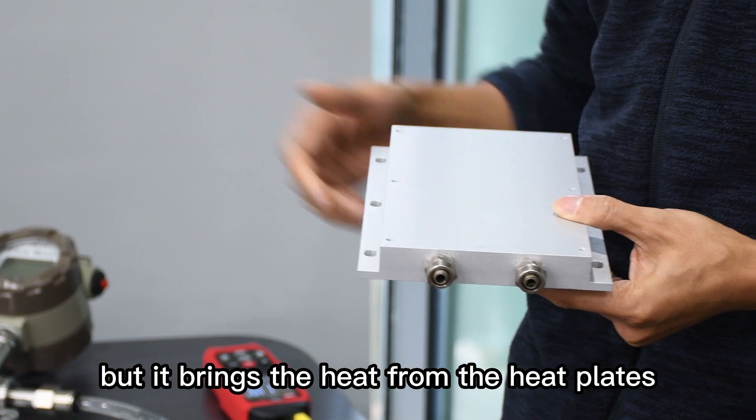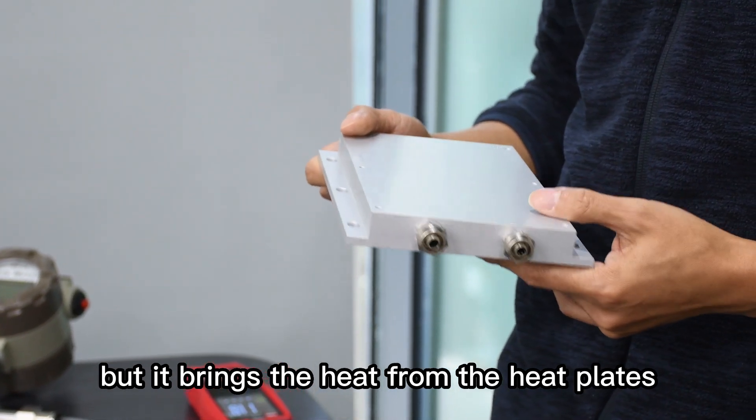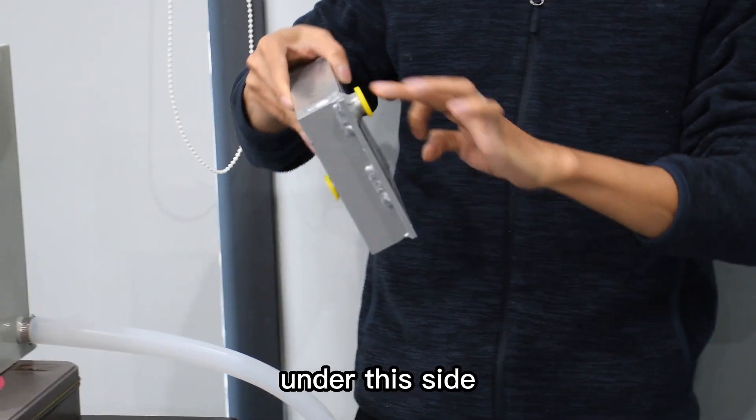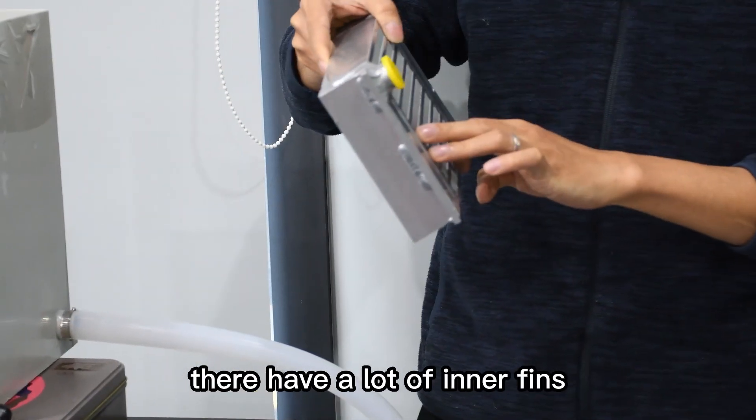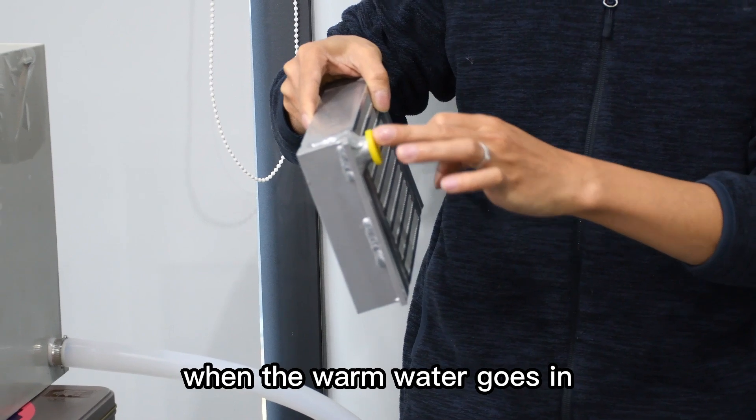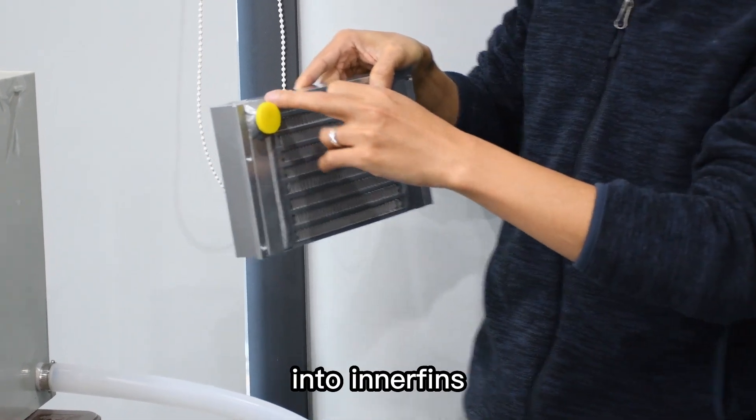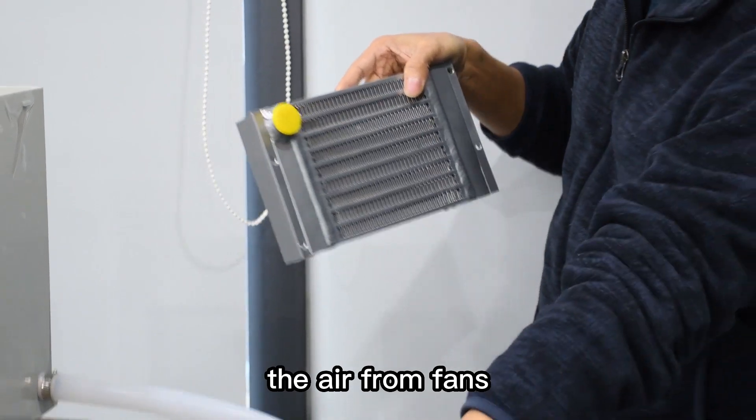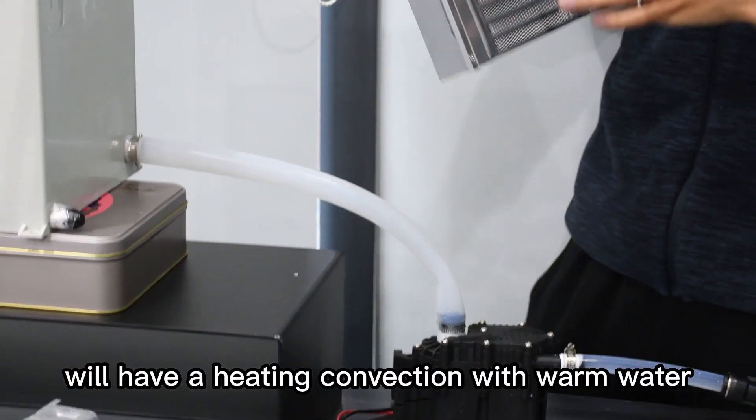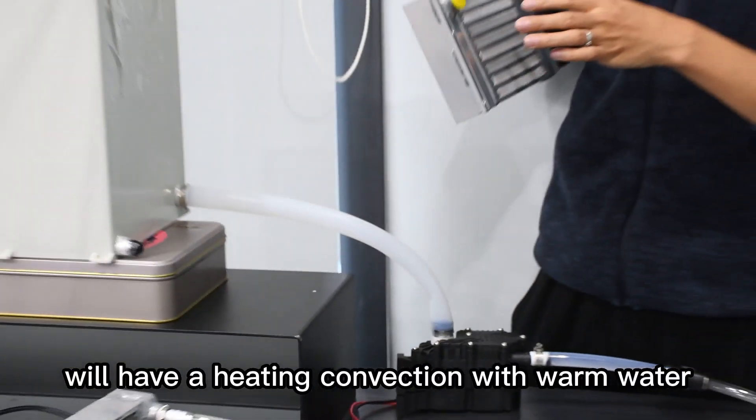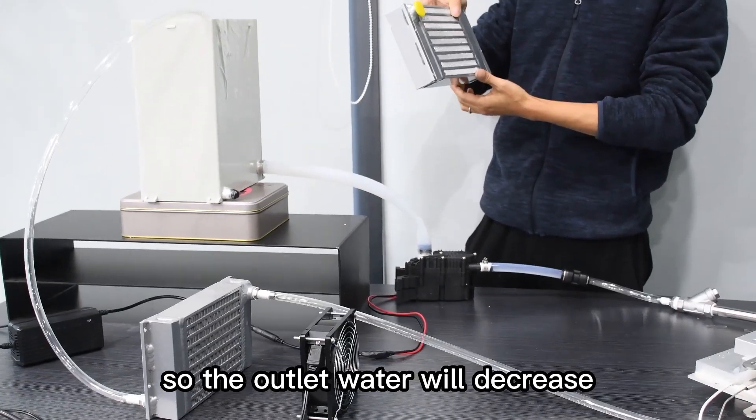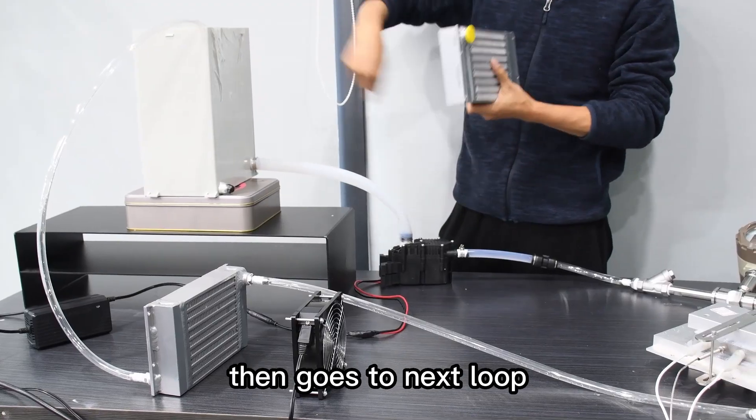It brings the heat from the heat plates. There are a lot of outer fins on this side, and they have a lot of inner fins. When the warm water goes into the inner fins, the air from the fans will have heating convection with warm water. So at the outlet, the water will decrease in temperature. Then it goes to the next loop.